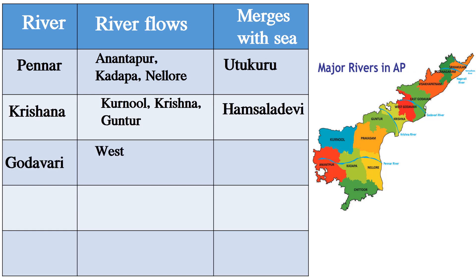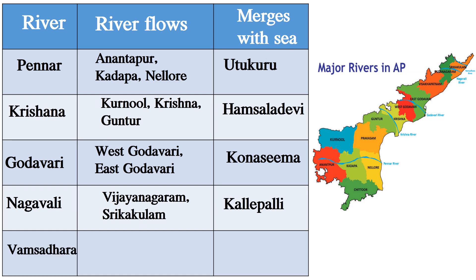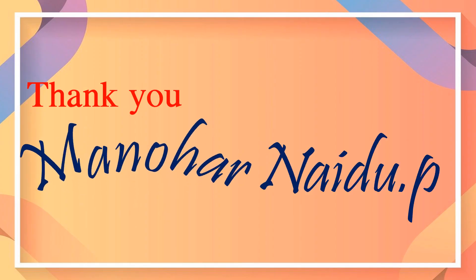Next, Godavari River flows through West and East Godavari districts in A.P. and merges with the Bay of Bengal at Antarvedi area. Next, Nagavali River flows through Vizianagaram and Srikakulam districts and merges with the Bay of Bengal at Kalingapatnam. Finally, Vamsadhara River flows through only one district, that is Srikakulam, and merges with the Bay of Bengal at Kalingapatnam.